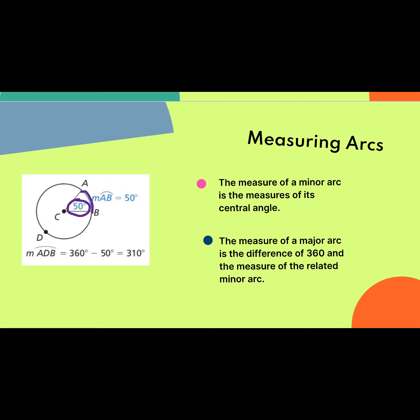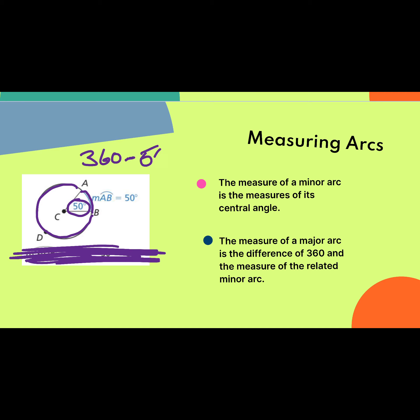So what do you think the measure of the major arc would be then? Right — 360, because that's our entire circle, minus the measure of our minor arc. So our answer would be 310.